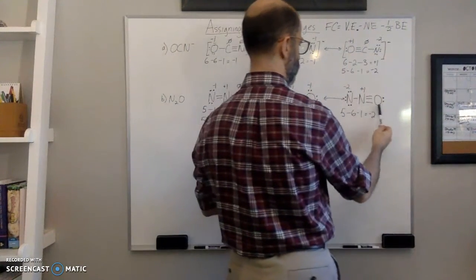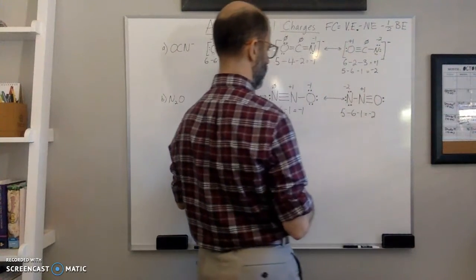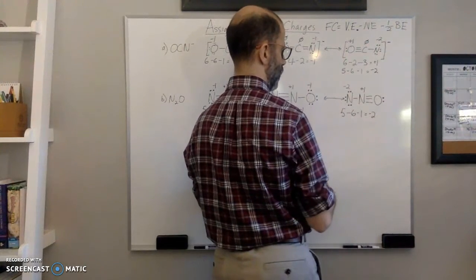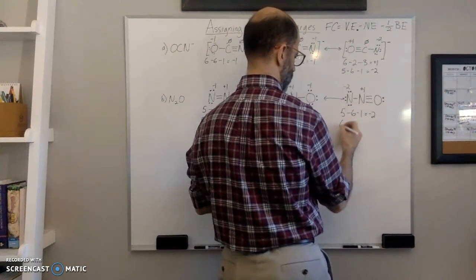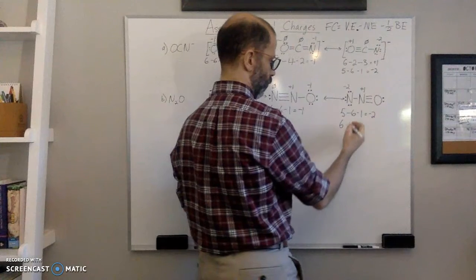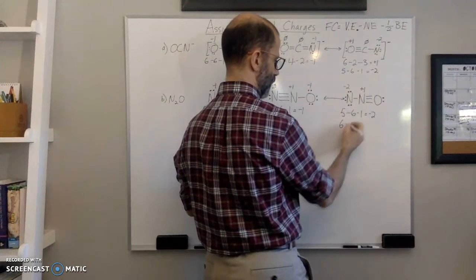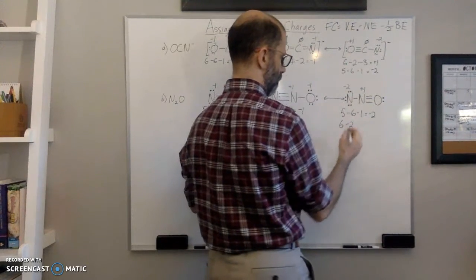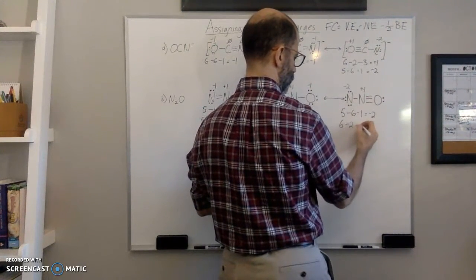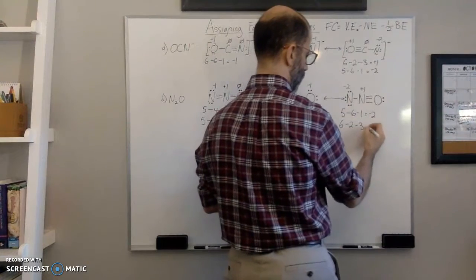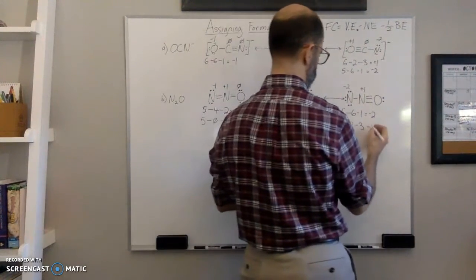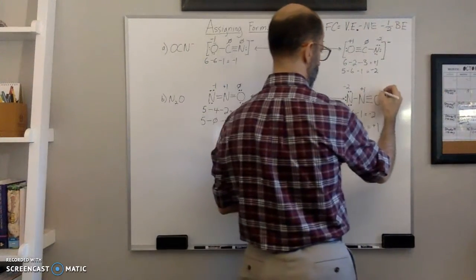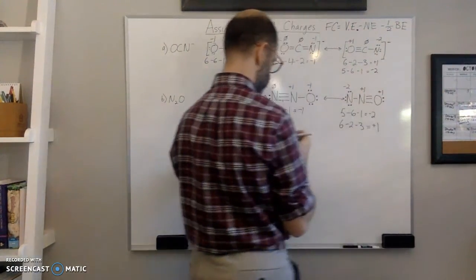This oxygen in the third structure has a triple bond with one lone pair. Calculating: six valence electrons for oxygen, minus two lone pair electrons, minus three (one from each of the three bonds). That gives plus one. So this oxygen has a plus one formal charge.